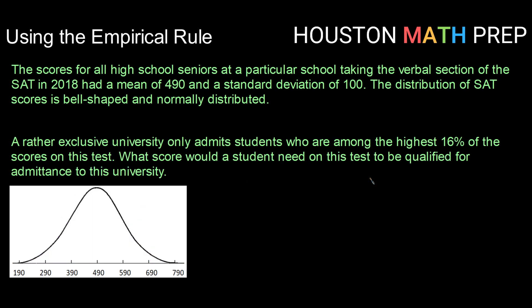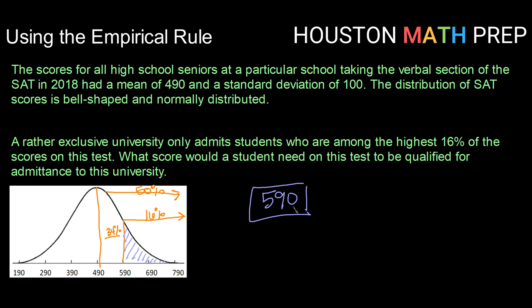A rather exclusive university only admits students among the highest 16% of scores. What score would a student need to qualify? Above 490 represents 50%. Above 590, that piece represents half of 68%, or 34%. So 50% minus 34% is 16%. The top 16% had to score above one standard deviation above the mean, so they needed to score above 590 to be qualified for admittance.